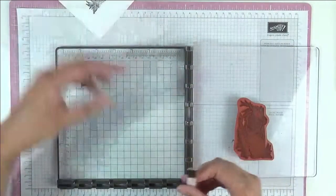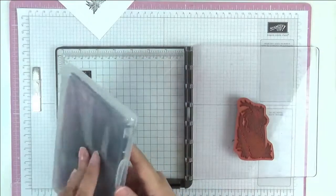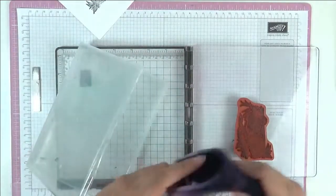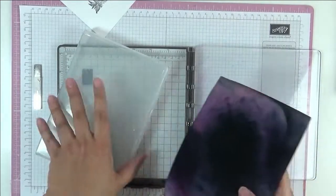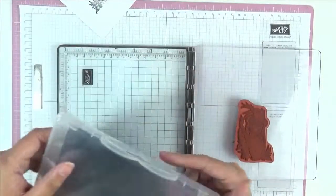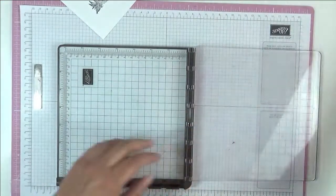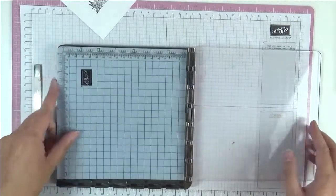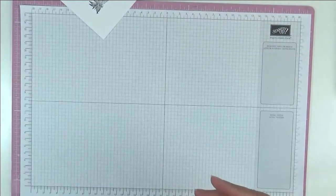So take that out of my Stamparatus. Now because it is a permanent ink, I'm actually going to clean this straight away to get as much off as I can. And then I'm going to give it a proper clean later with Stazon ink and stamp and scrub. So set that aside. Let's just put the Stamparatus away, put it back in its little home.